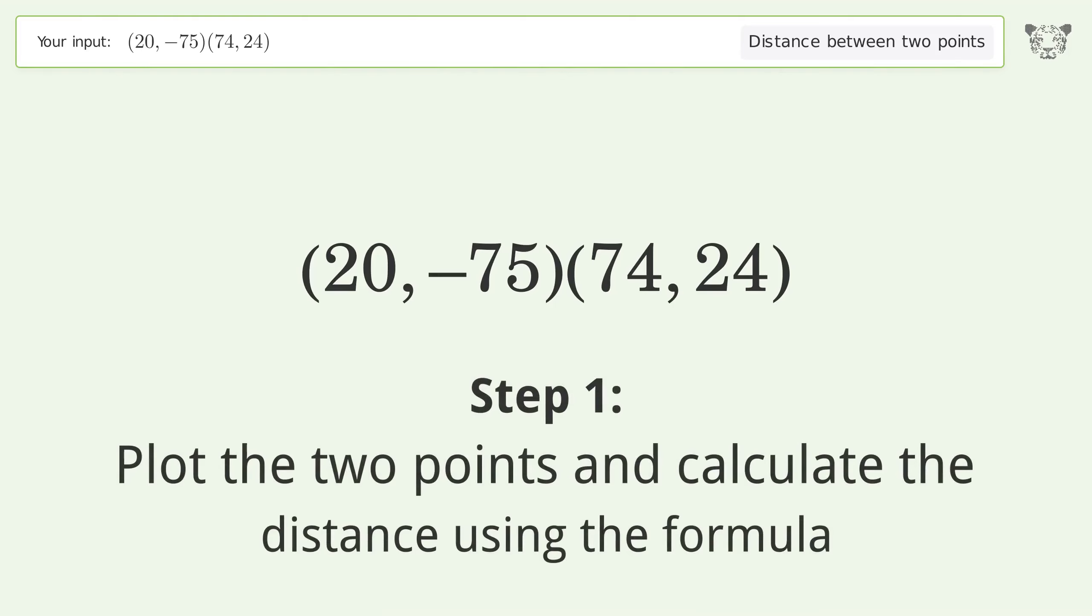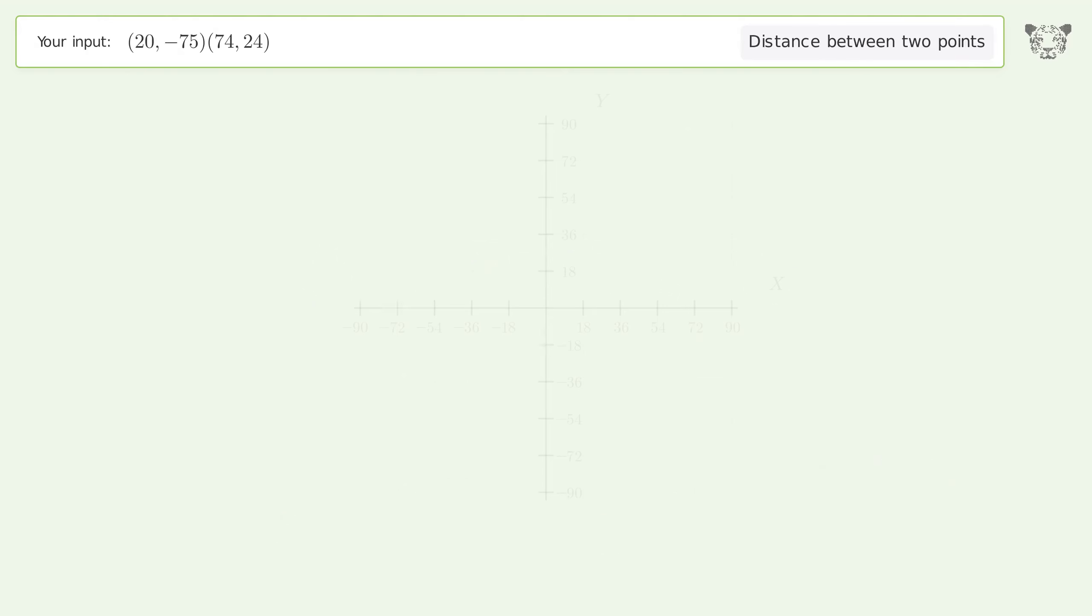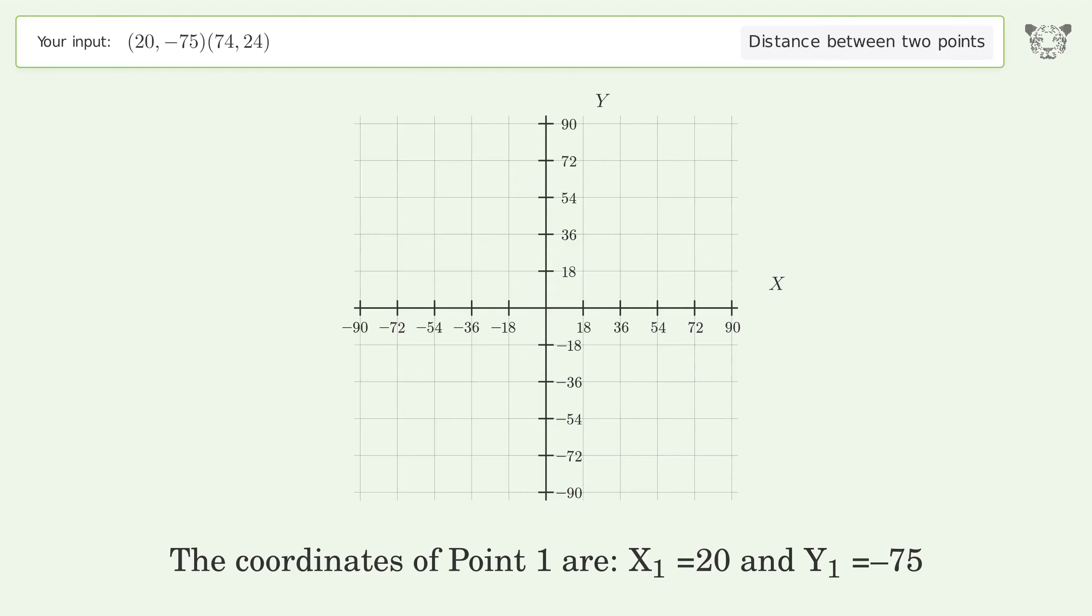Plot the two points and calculate the distance using the formula. The coordinates of point 1 are x1 equals 20 and y1 equals negative 75. The coordinates of point 2 are x2 equals 74 and y2 equals 24.